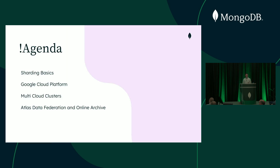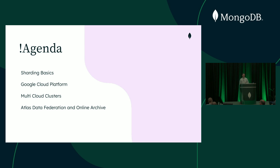We only have so much time today, so there are a couple of things we're going to leave on the cutting room floor. We're not going to go through sharding basics — what is a shard, how does sharding work, shard keys, and so forth. We're also not going to cover Google Cloud Platform or multi-cloud clusters, since GCP's private networking has some minor differences from AWS and Azure. And we're not going to talk about data federation or online archive.